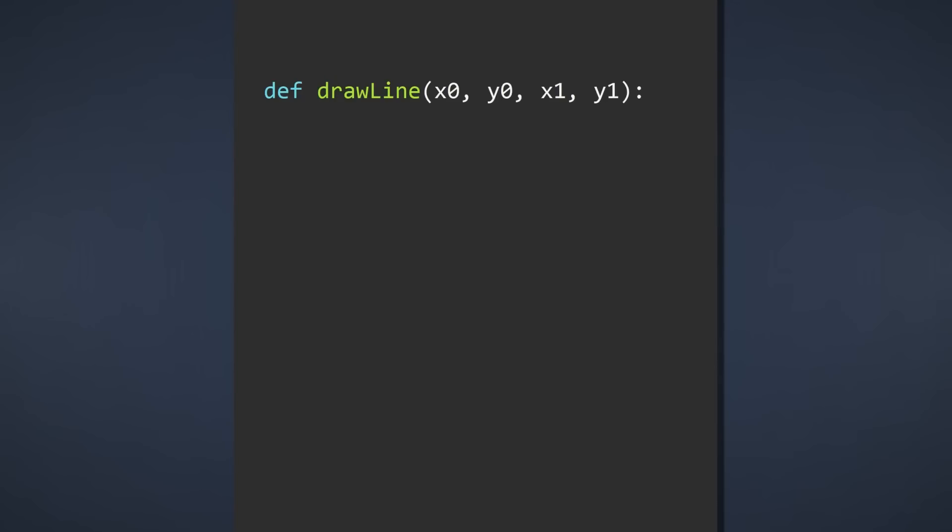Therefore, we are able to draw lines at subpixel values. Anyway, let's continue and calculate delta x, delta y, and m. And I'll also add a little condition to avoid a division by zero.